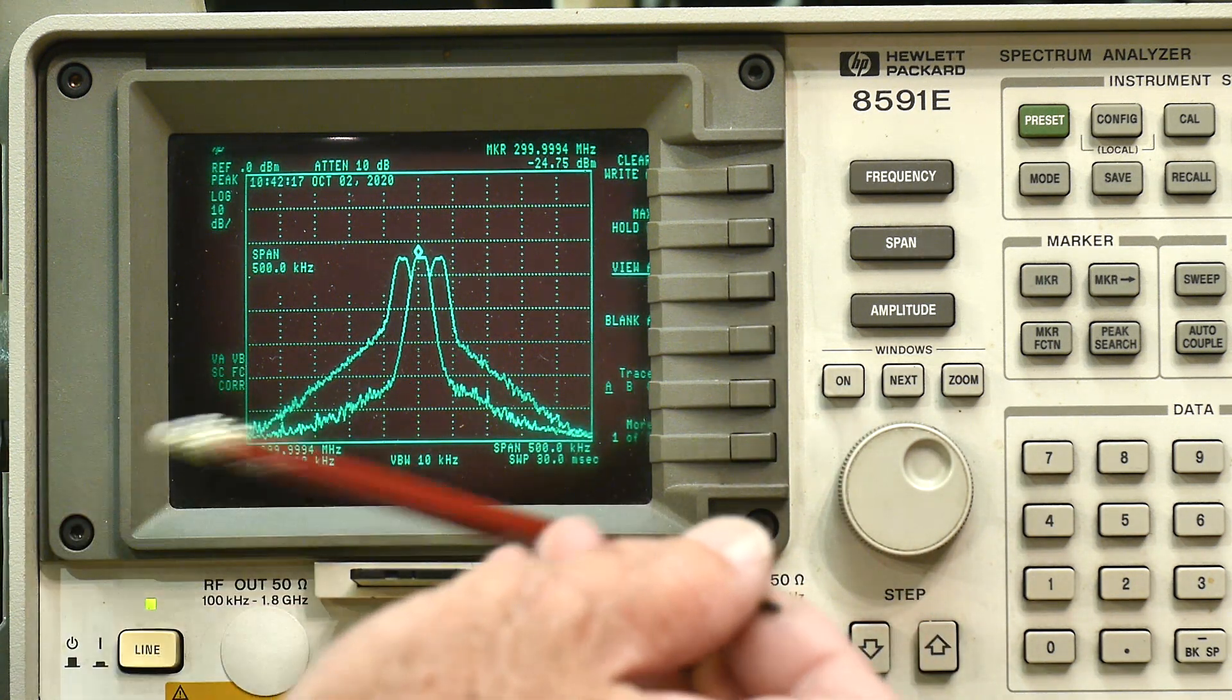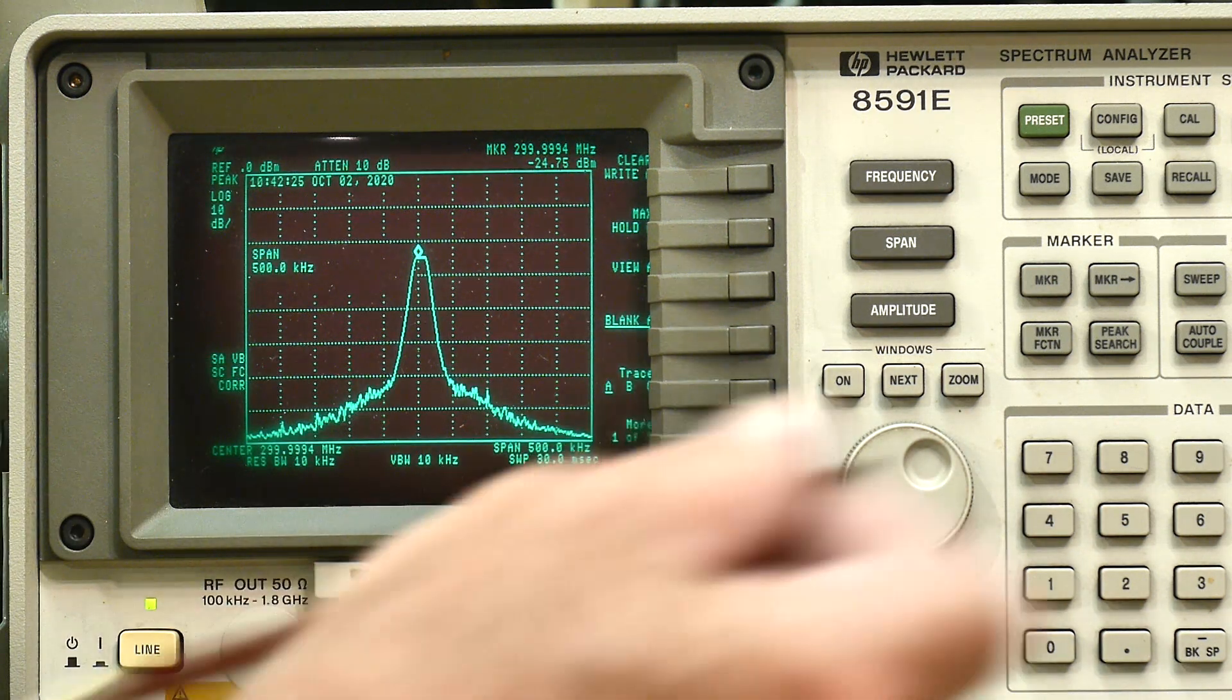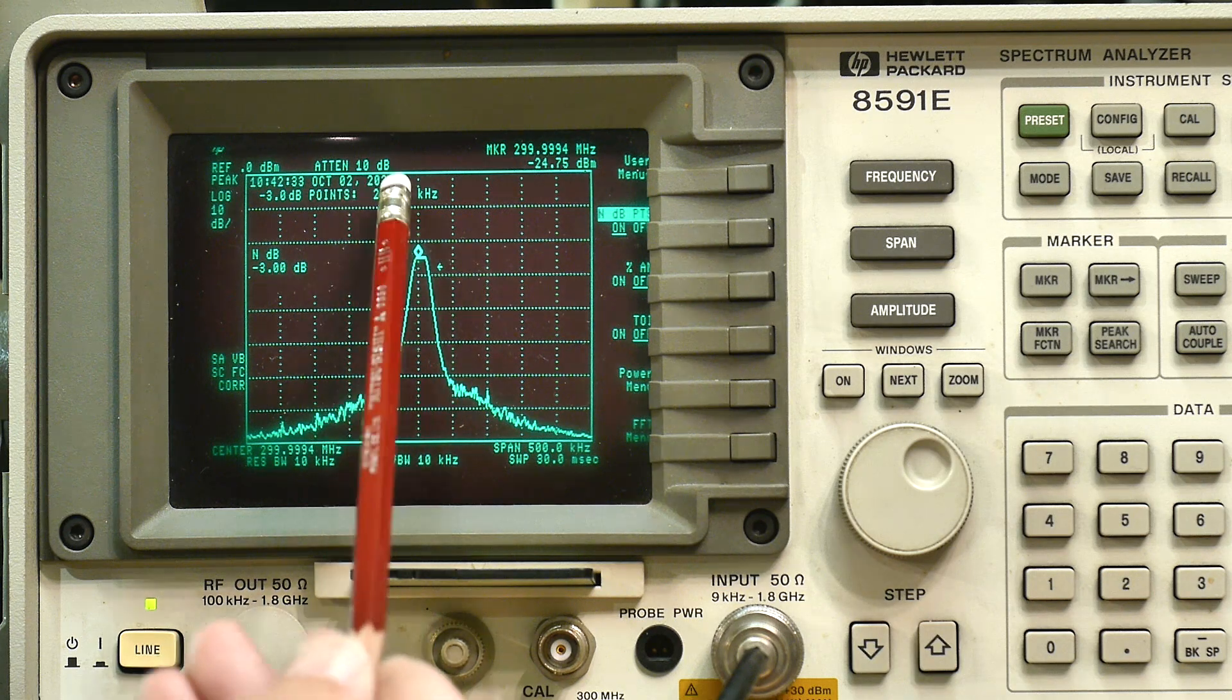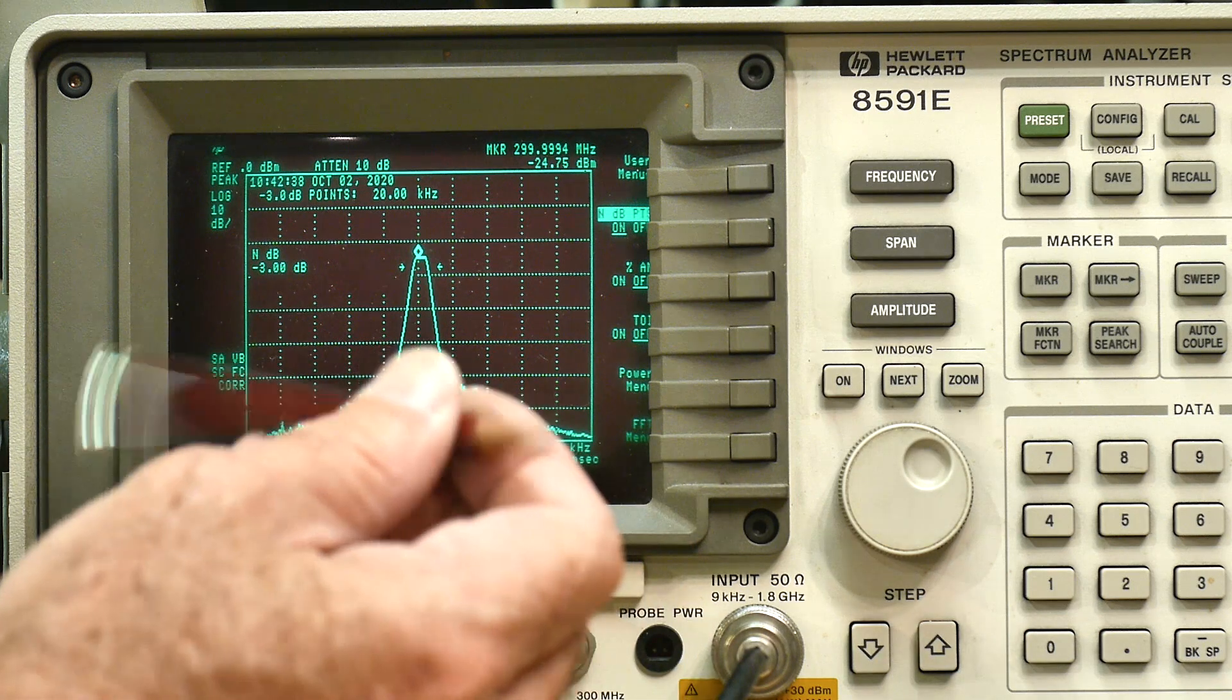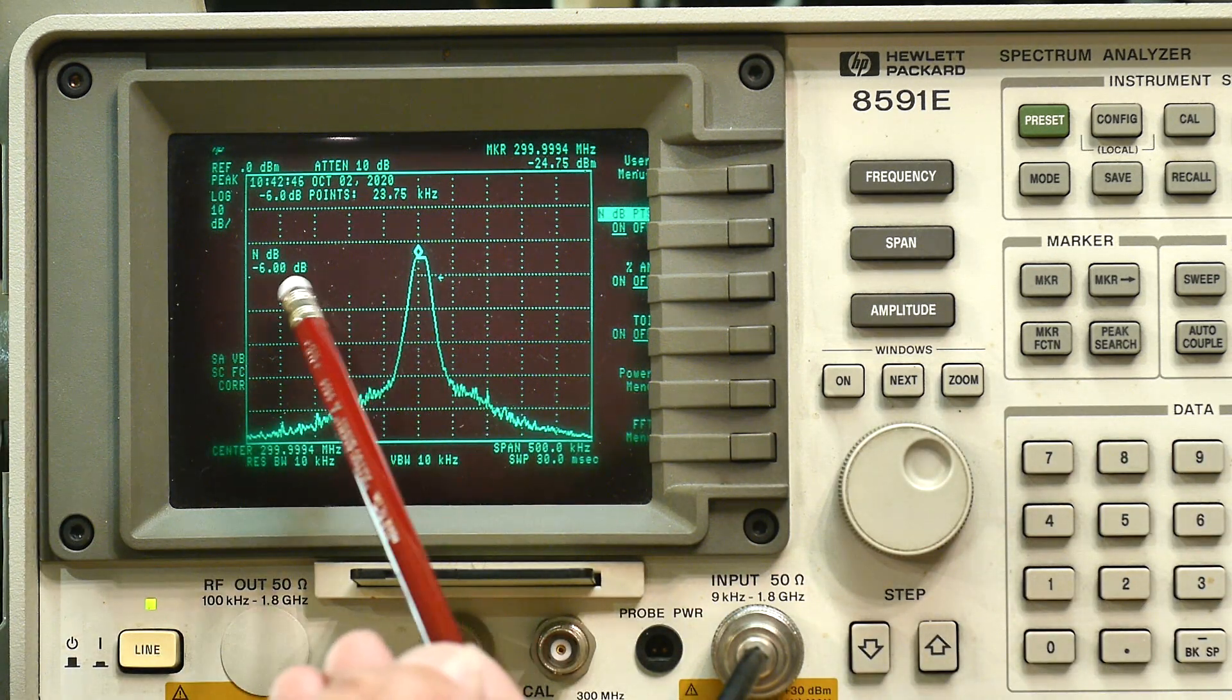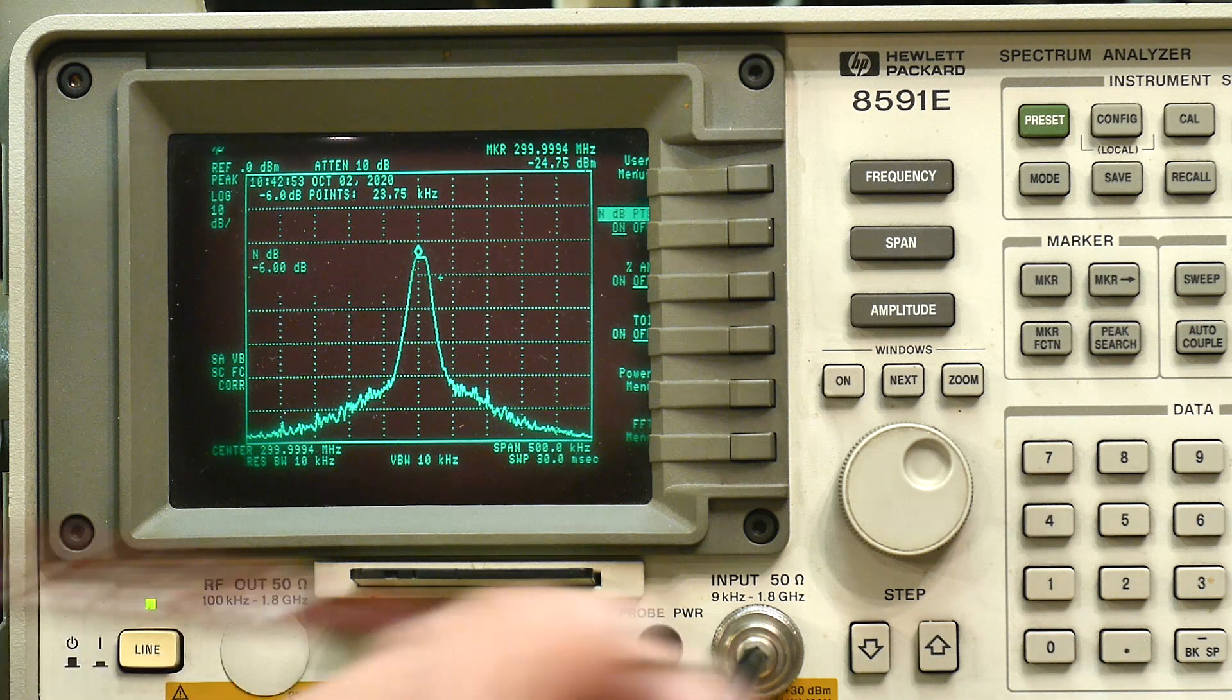Let's say that we want to measure the width of these things. Again, there's a built-in feature. I can say measure and I can say dB. It automatically finds the 3 dB point and measures that at 20 kilohertz. I could go down if I wanted to measure instead of at the minus 3 dB point - I wanted to measure at the minus 6 dB point - I just say 6 and it automatically goes down, finds those two points and says that's at 23.75 kilohertz. So again, built-in measurements, very cool.